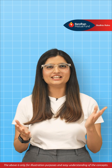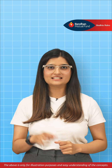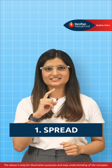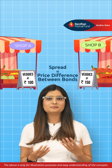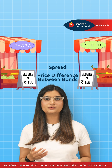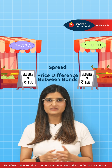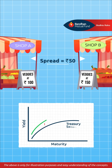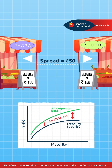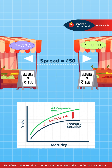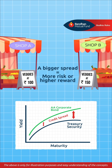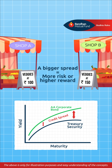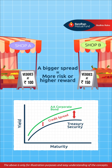Let's simplify tricky bond terms. Number 1: Spread. Think of it like the price difference between two stores. It is the gap between the yields of two bonds. A bigger spread means more risk or higher reward.